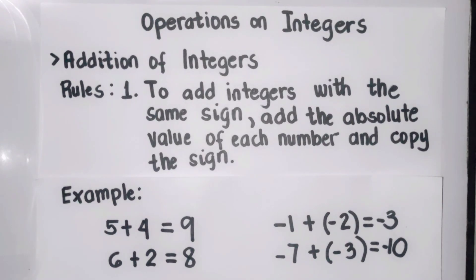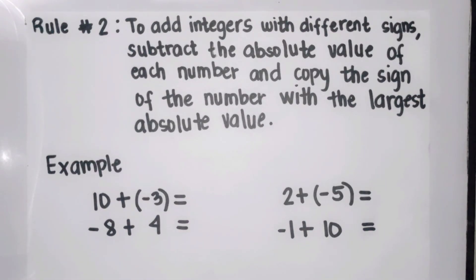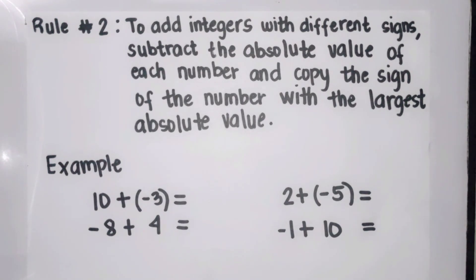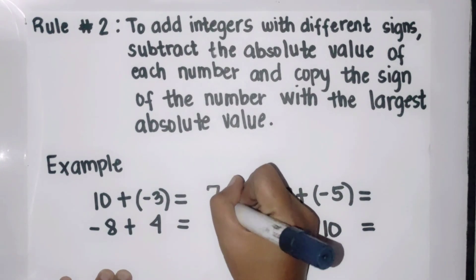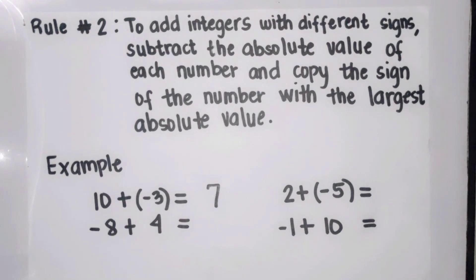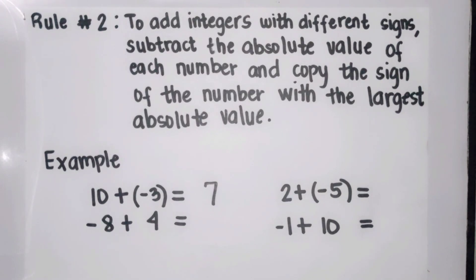Therefore our answer is negative ten. Let's proceed to rule number two: to add integers with different signs, subtract the absolute value of each number and copy the sign of the number with the largest absolute value. First example: ten plus negative three. Since ten is positive and three is negative, we should proceed to subtraction. Ten minus three is seven, and since ten has the larger absolute value, our final answer is positive seven.